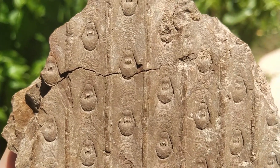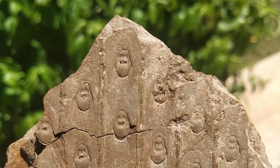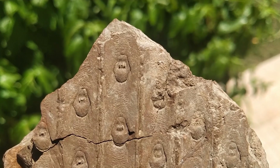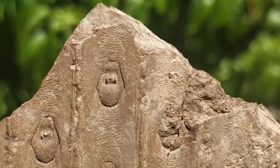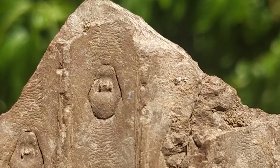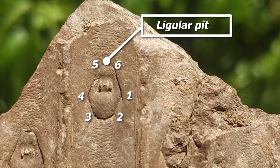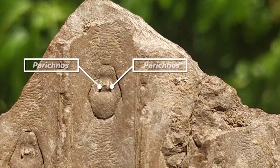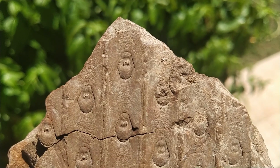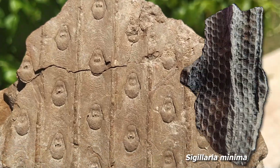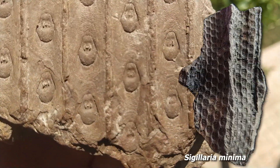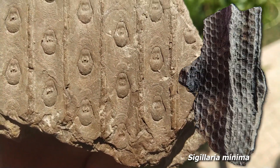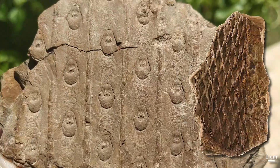Sigillaria is a tree-like club moss characterized by leaf scars which contain leaf cushions. Sigillaria leaf scars are easily recognizable by their hexagonal shape, with a ligula pit at the top and two characteristic holes called parichnos. These hexagonal leaf scars are organized in a linearized structure which gives them the appearance of a scale tree, just like its close relative Lepidodendron.